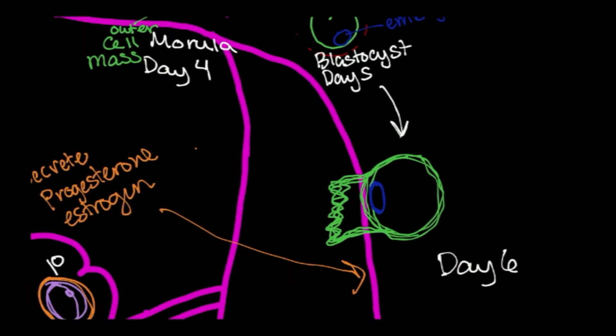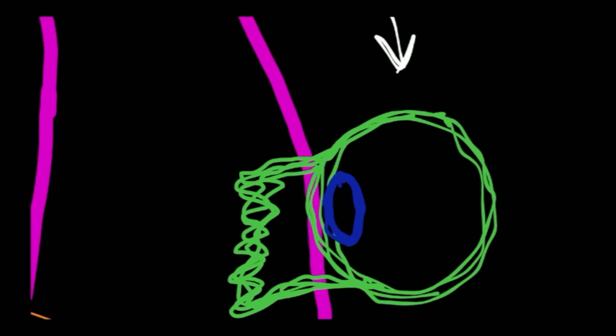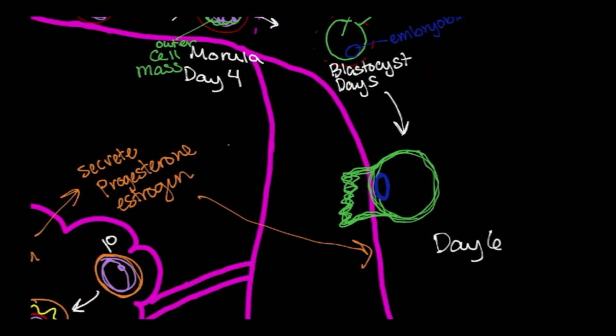So first of all, the epiblast is going to be located on this side of the blastocyst, the side closest to the endometrium. And as differentiation of the embryoblast occurs, you have the epiblast form. So this is the epiblast and the hypoblast. And this forms that bilaminar disc right around the day six, day seven and kind of poking into the second week.